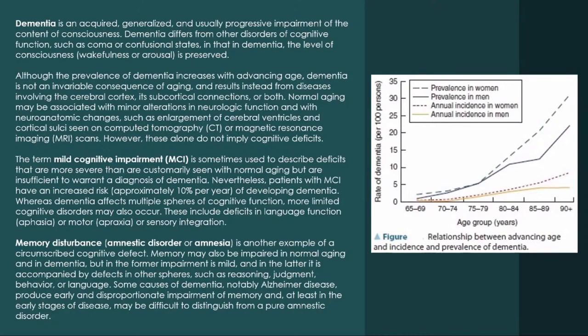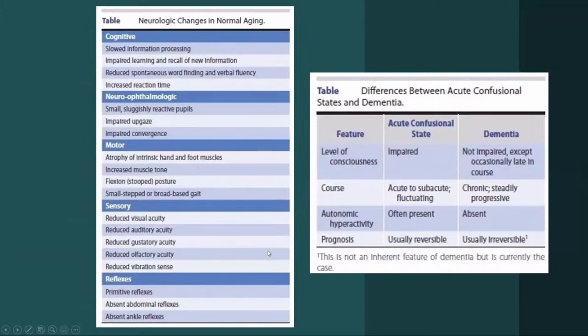The bottom line is: when you say dementia, the day-to-day living and activities of daily living of the patient must already be affected. It's not just memory loss — the behavior and personality of the patient also become affected. With MCI, the patient's day-to-day living is not really affected; there may be a little forgetfulness, but the patient can still function in society.